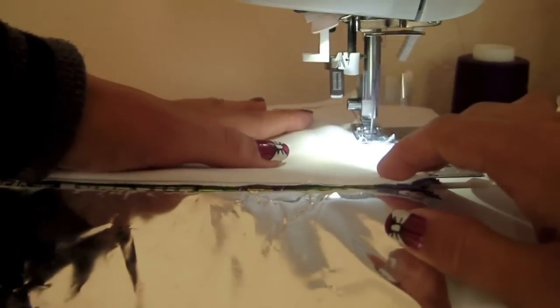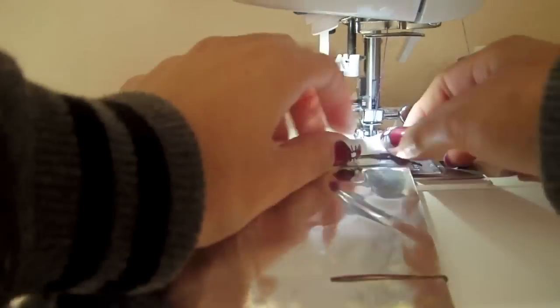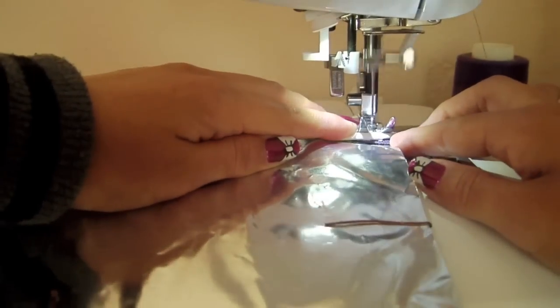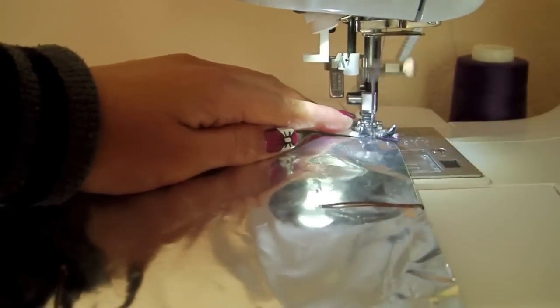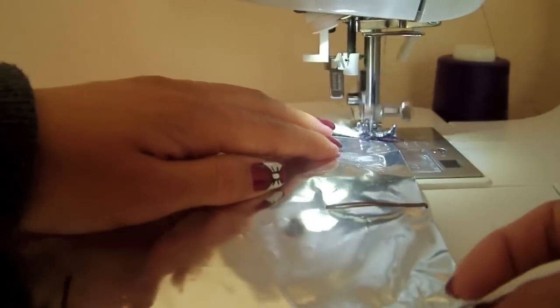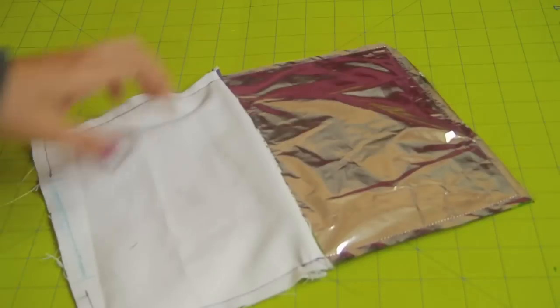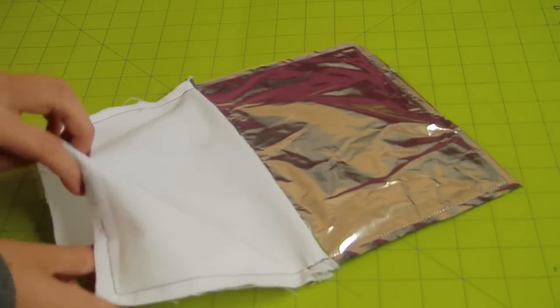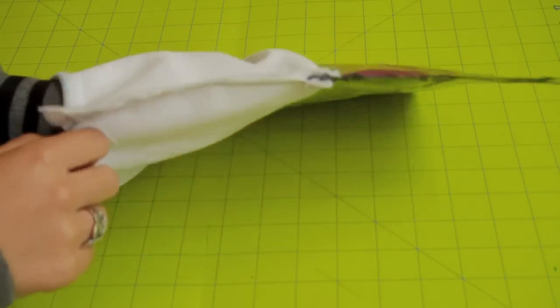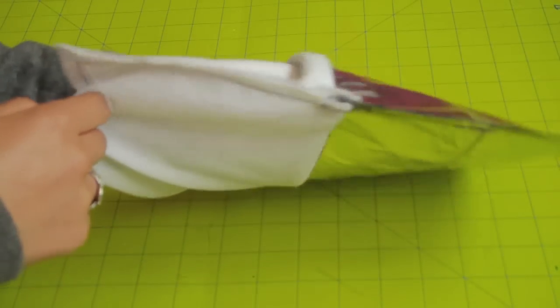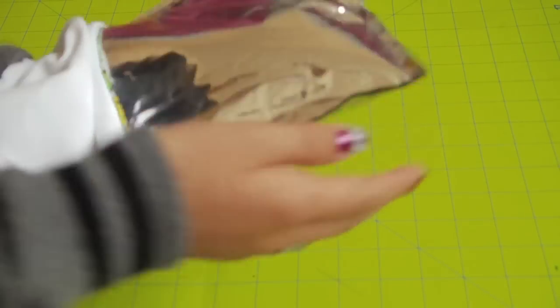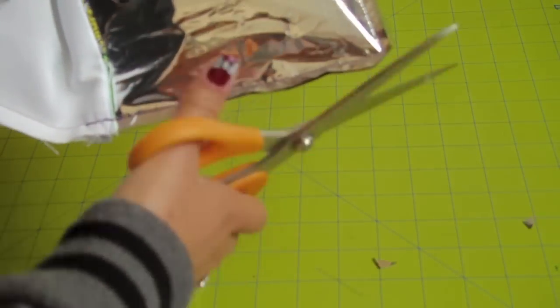When you get to the sides of the zipper, you want to go slow and double stitch.